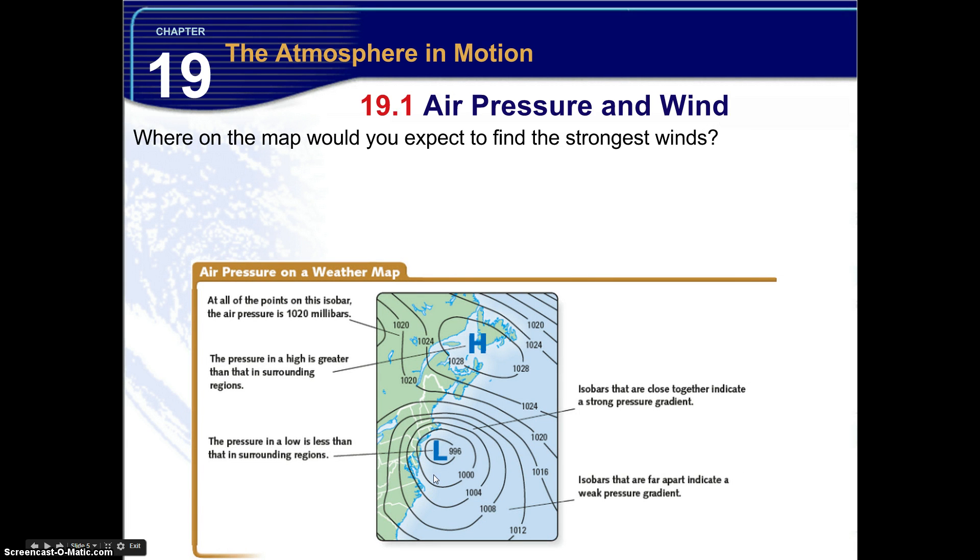So where on the map would you expect to find the strongest winds? Very good. Where isobars are close, as you can see right here, there's an abrupt change in the air pressure. We go from about 1,000 millibars, way up to about 1,016 in a very short distance.